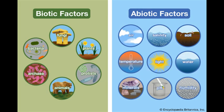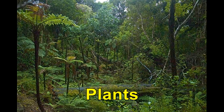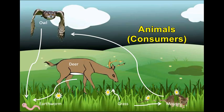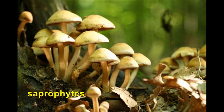When we think of life in the universe, we think of two major factors: biotic and abiotic factors. Biotic factors are the living components of the universe, from plants which are the producers, animals which are the consumers like us, and saprophytes which are the decomposers. As a result of living organisms being present in an ecosystem, factors like predation and competition arise.